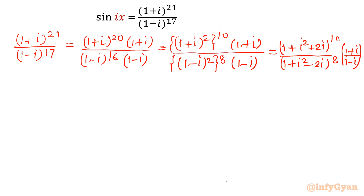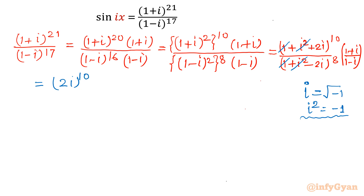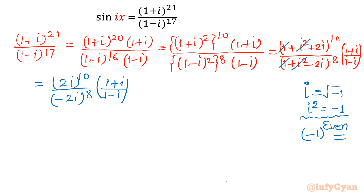Now we know that for complex numbers, i² equals negative 1. So I can cancel the i² terms. Since i² = -1 in both numerator and denominator, what I will have is (2i)^10 divided by (-2i)^8, times (1+i) over (1-i). Now negative 1 with even power is plus 1, so I will split this as 2^10 times i^10 divided by 2^8 times i^8, times (1+i) over (1-i).